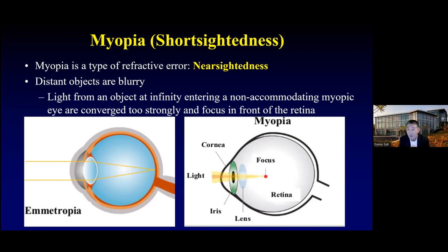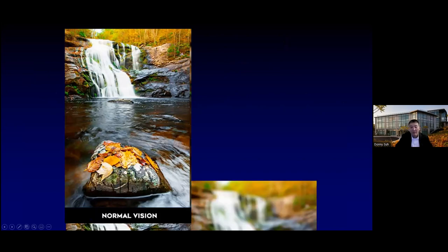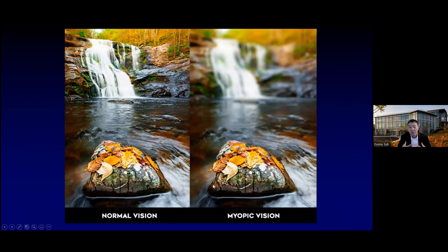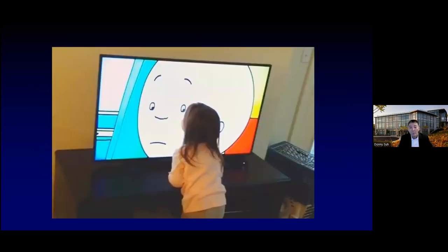I'm going to start using the term myopia moving forward. If you have normal vision, you can see everything clearly. But if you have nearsightedness, anything close to you is clear while anything far away is blurred. What are the symptoms and signs of nearsightedness in pediatric patients? You'll see these kids squinting, complaining of headaches, eye strain, and just not being able to see. When you see them at home, they're glued to the TV, very close in proximity — that is a sign your child may be nearsighted and needs to be evaluated.